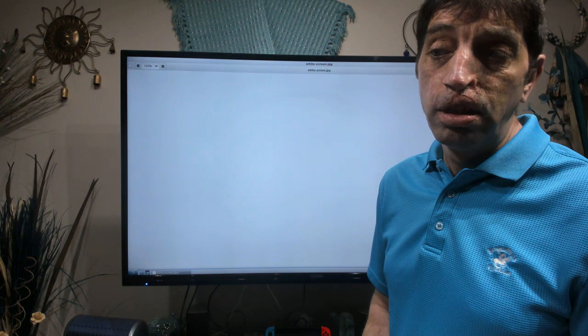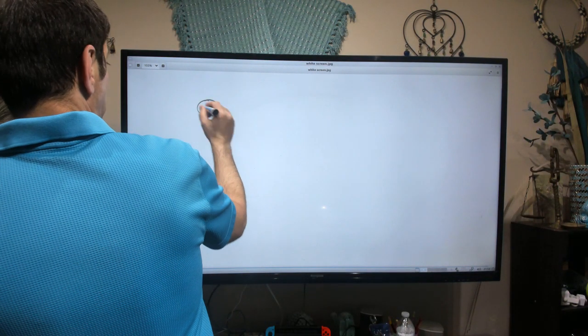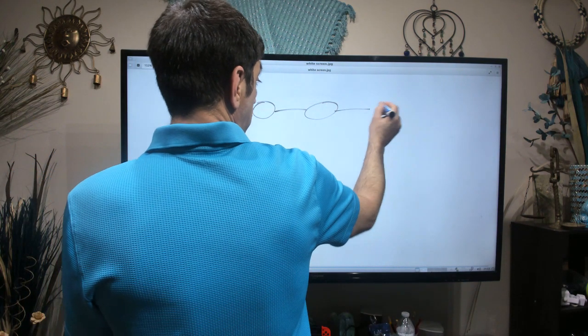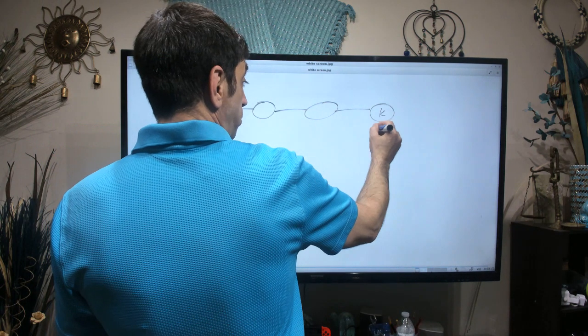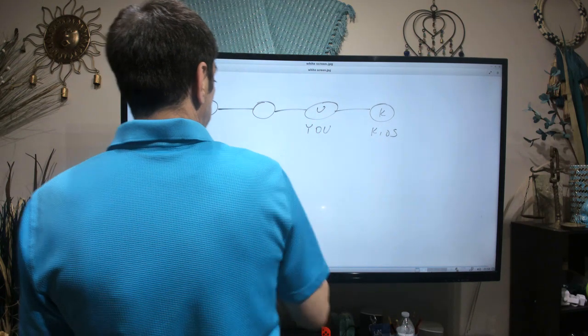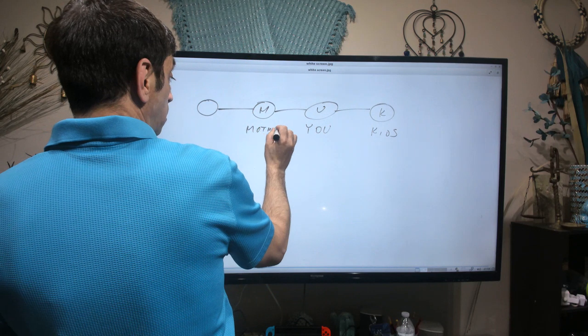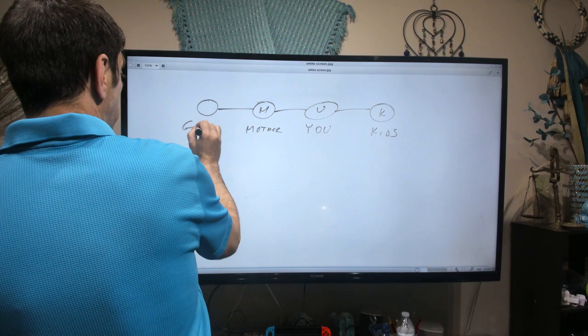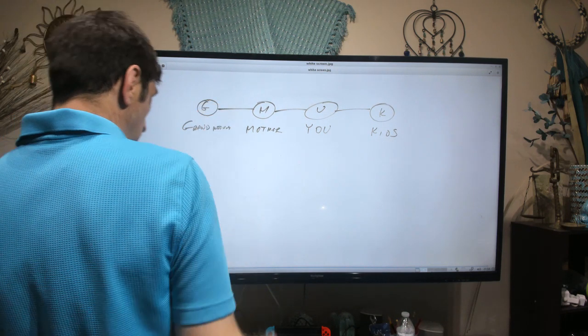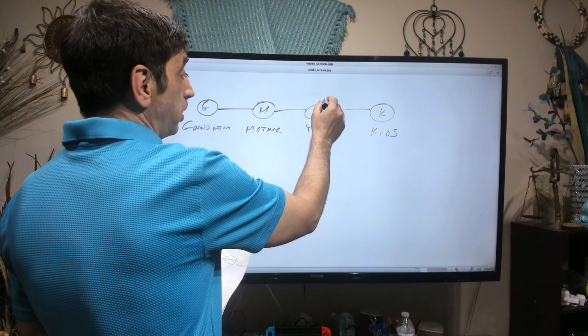First of all, to understand how this is passed, let's say this is your kid. This is you. This is your mother. And this is your grandmother.